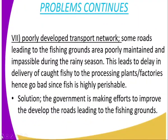Number seven is a poorly developed transport network. Some roads leading to fishing grounds are poorly maintained and impassable during the rainy season. This leads to delays in delivering the catch to processing plants and factories, since fish is highly perishable. The solution is that the government is making efforts to improve and develop roads leading to the fishing grounds.